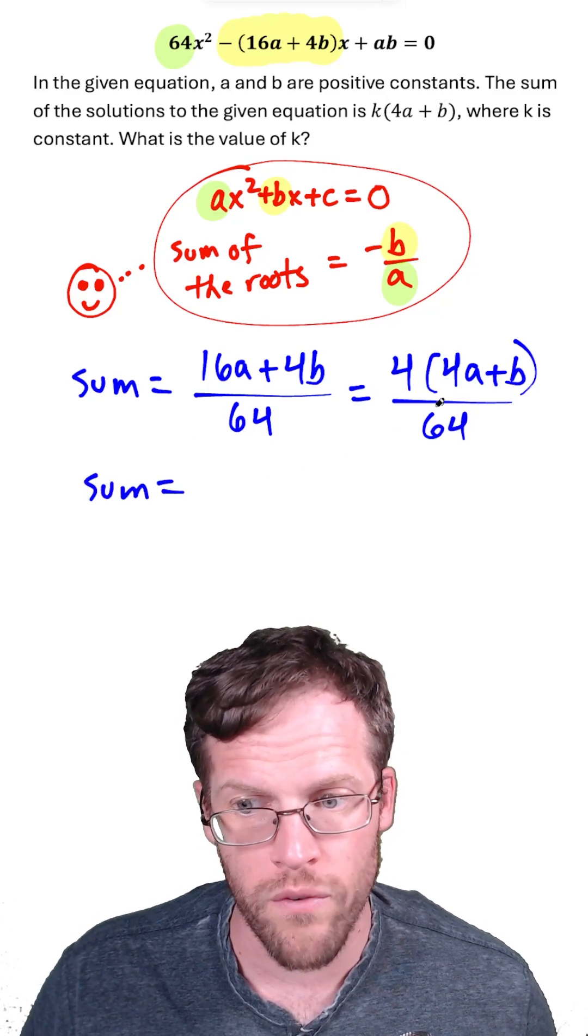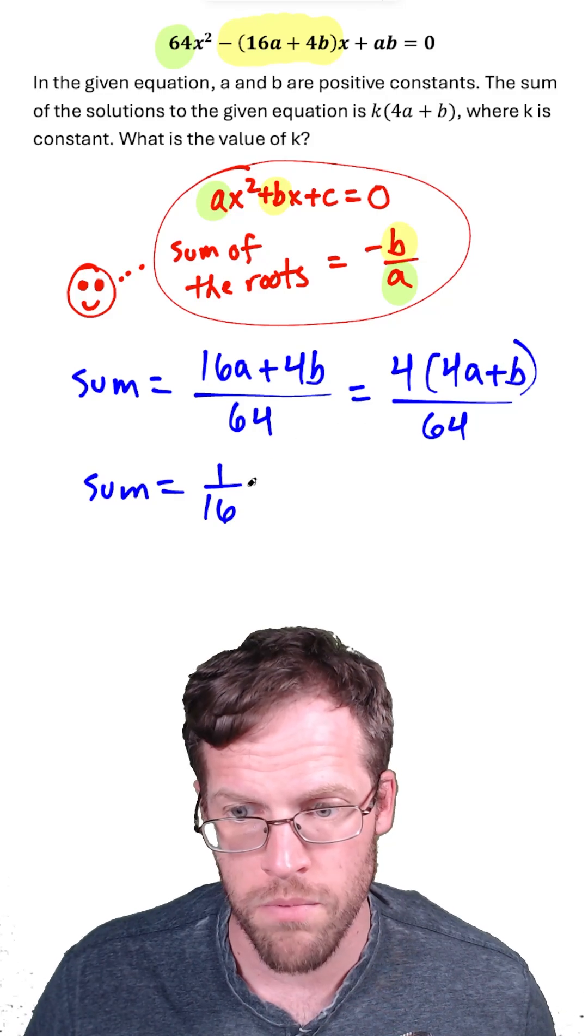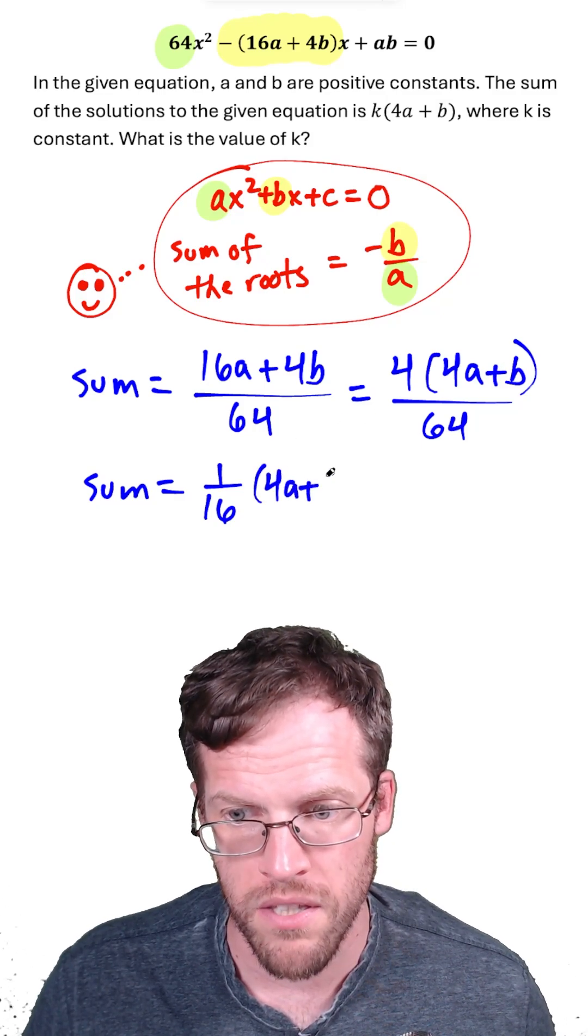We could say 4 over 64 makes 1 over 16, and we're multiplying by the factor 4a plus b.